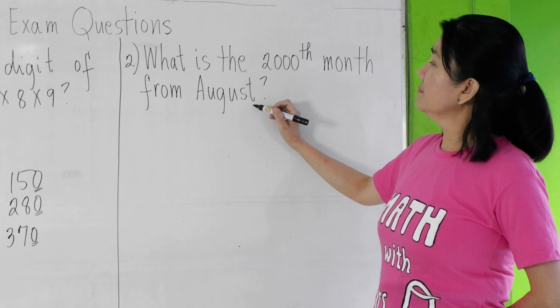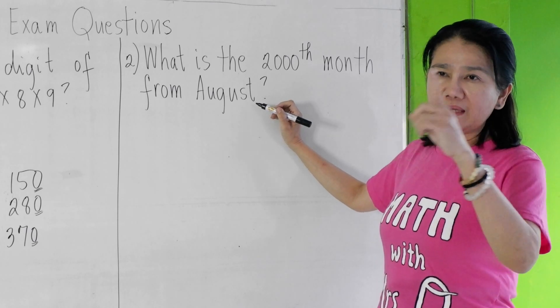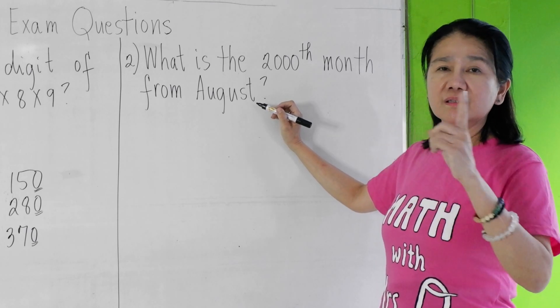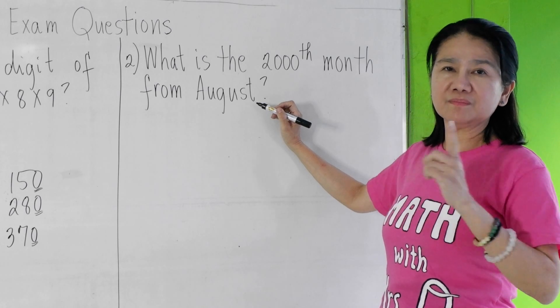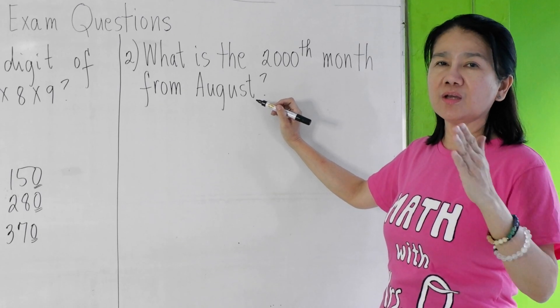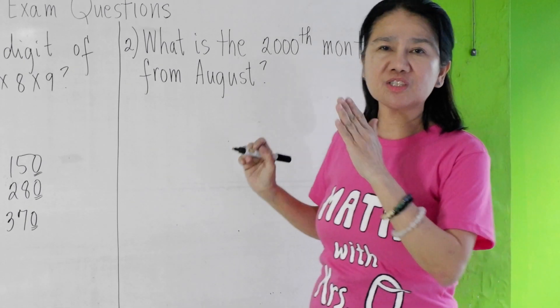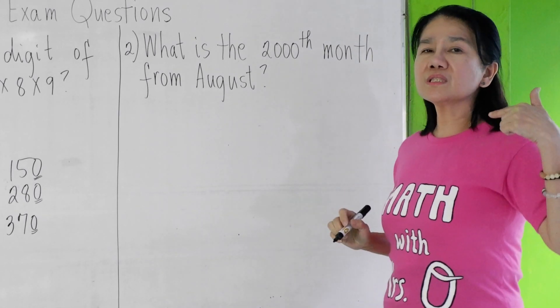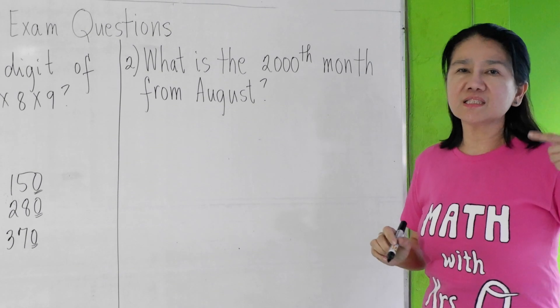If you observe, the months in a year are in a pattern. You have January, February, March, April, May, June, July, August, September, October, November, December. So there are always 12 months in a year.